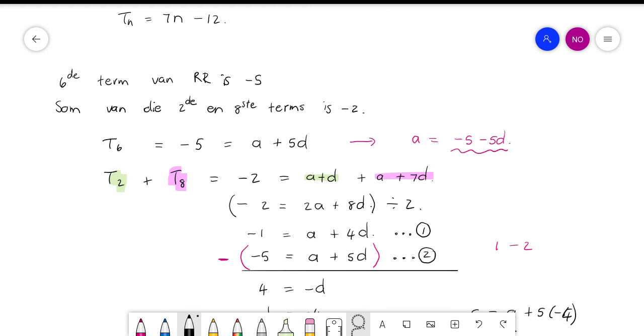The 6th term is minus 5, and the sum of the 2nd and the 8th term is minus 2. In other words, if I add them together, I get minus 2. So the negative 5 is equal to a plus 5d. Do you all understand that part?